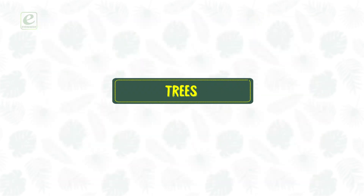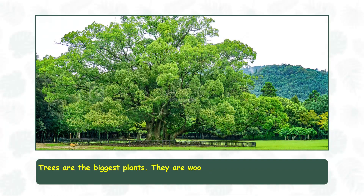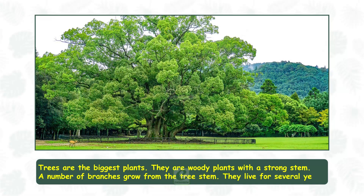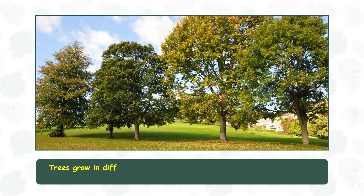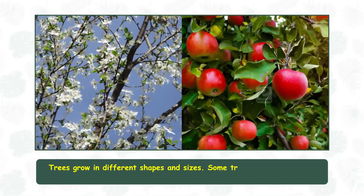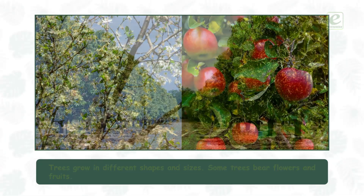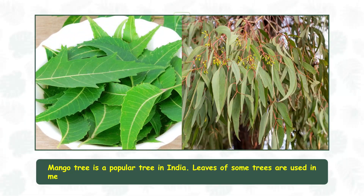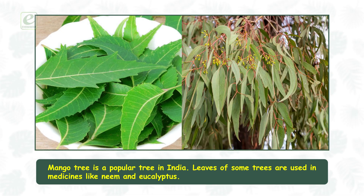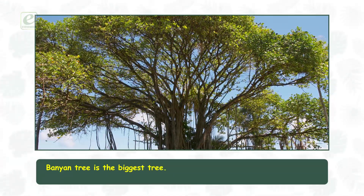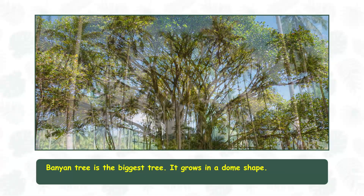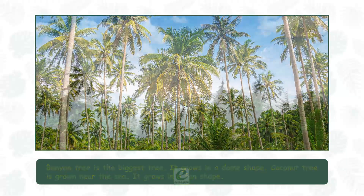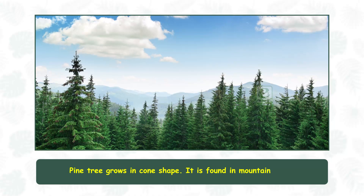Trees. Trees are the biggest plants. They are woody plants with a strong stem. A number of branches grow from the tree stem. They live for several years. Trees grow in different shapes and sizes. Some trees bear flowers and fruits. Mango tree is a popular tree in India. Leaves of some trees are used in medicines, like neem and eucalyptus. Banyan tree is the biggest tree and grows in a dome shape. Coconut tree is grown near the sea and grows in a fan shape. Pine tree grows in a cone shape and is found in mountains only.